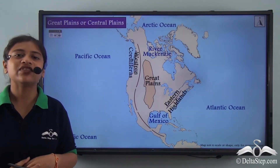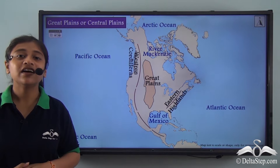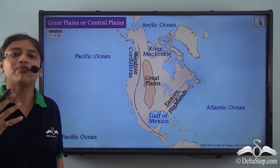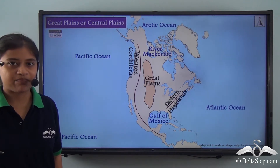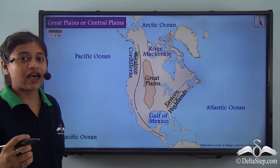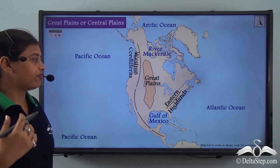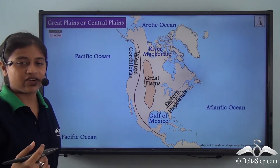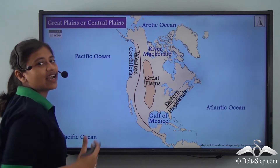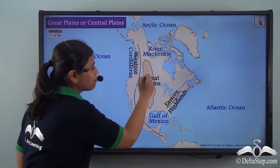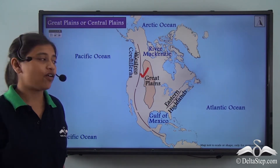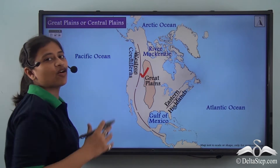In our previous lesson on the physical divisions of North America, we understood the Western Cordilleras, which are a chain of parallel mountain ranges. That was the first physical division we learnt. In today's lesson, we will be focusing on the second physical division of North America. It includes a region of vast fertile land and this is known as the Great Plains, also called the Central Plains because it lies at the centre of the continent.